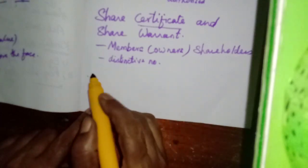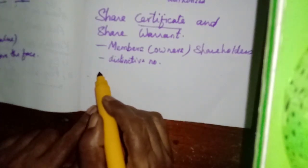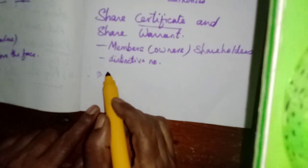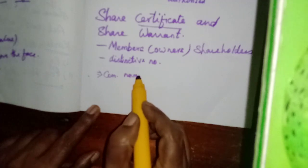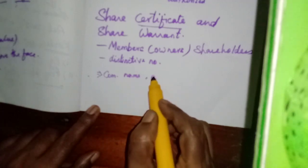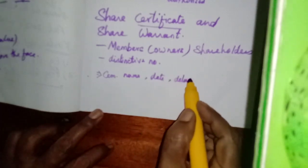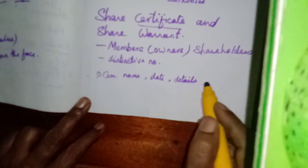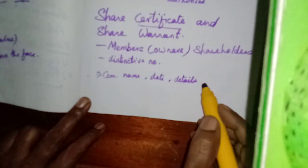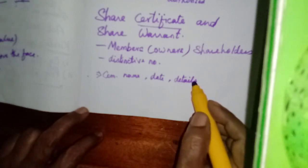What is mentioned in the share certificate? First, the company name. Then the date of issue. Then all the details of the member — their name, address, contact number, full name — everything.